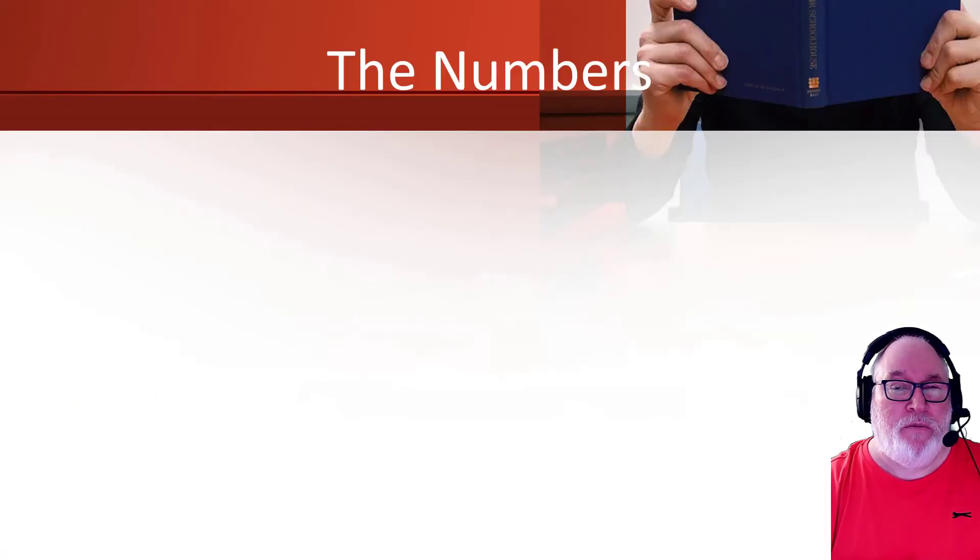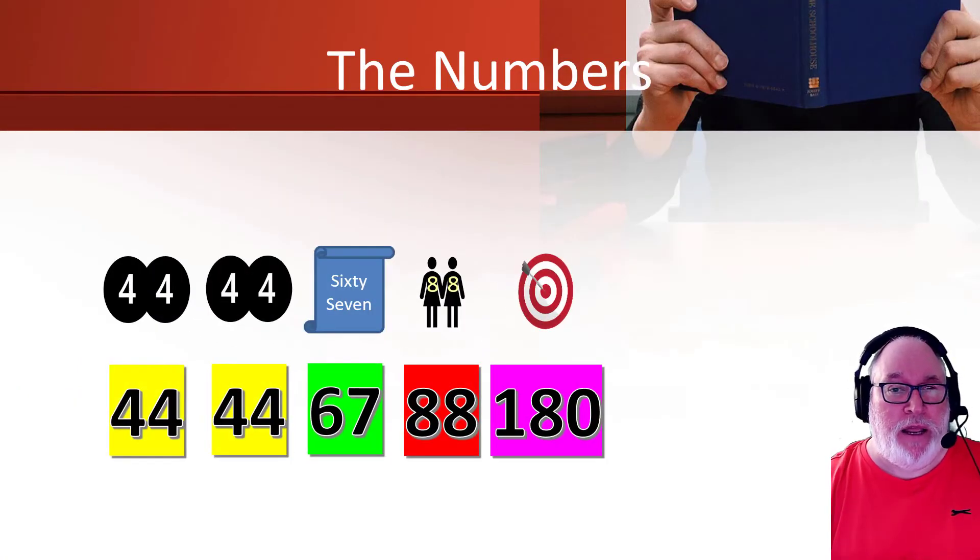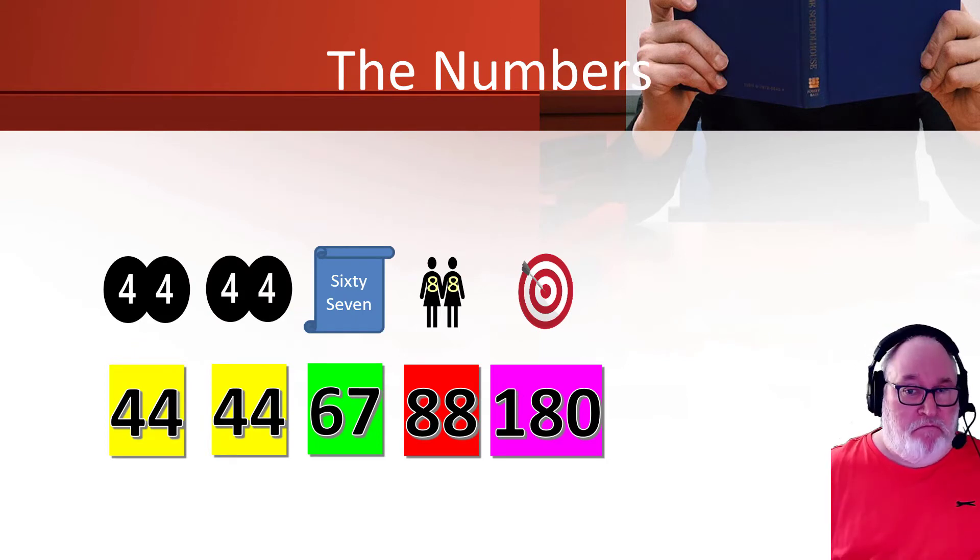So let's have a look. So an example and then you can see what's happening here. So if we have these numbers here, we've got five numbers: 44, 44, 67, 88, 180. Now it could be anything, it could be the results of a quiz or something. It could be anything at all that you've gathered these numbers.